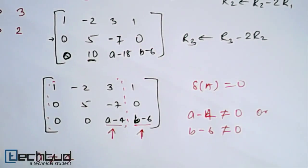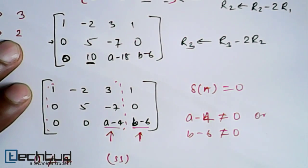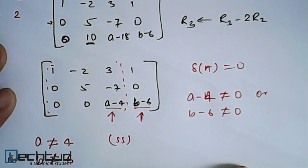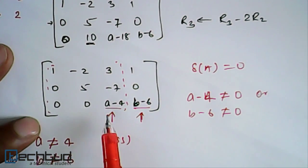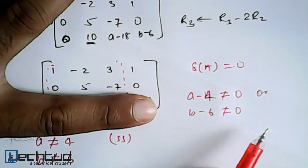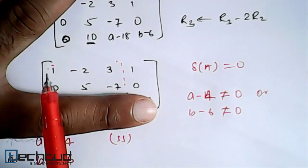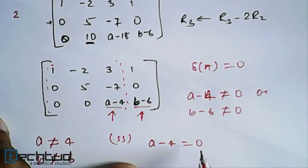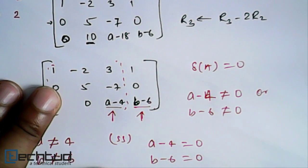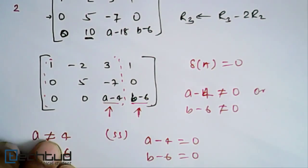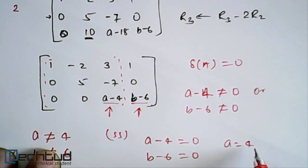For the second problem where we have rank equal to 2, the most important condition is this entire row should be zero. All the rows are zero, then in this case we will have to form minor of 2×2 and we will have to check. The important condition here is a-4 should be equal to 0 and b-6 should be equal to 0. The value will be both a equal to 4 and b equal to 6.